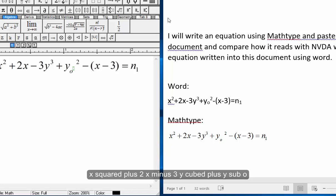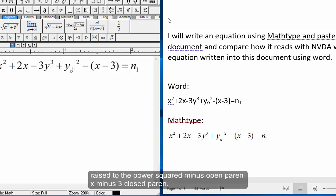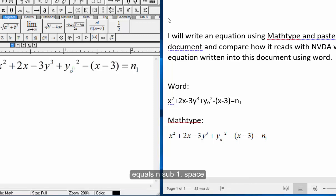MathType: x squared plus 2x minus 3y cubed plus y sub 0 raised to the power squared minus open paren x minus 3 close paren equals n sub 1.